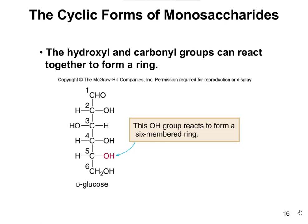Regardless of the aldohexose you get, you should be able to draw the appropriate ring. Here's our 6-carbon sugar in linear form, with the numbered carbons 1 through 6. The idea is that your carbonyl group is going to react with this particular OH. Specifically, what happens is this OH comes up and attacks that carbonyl group.